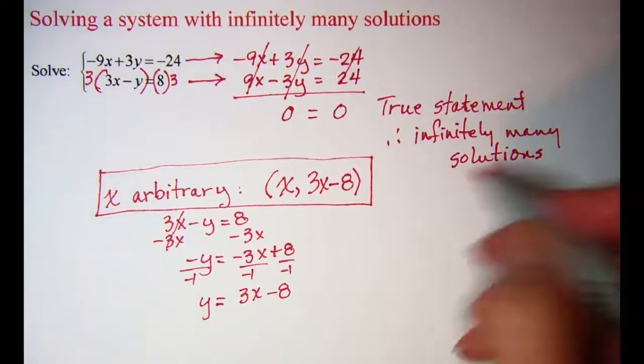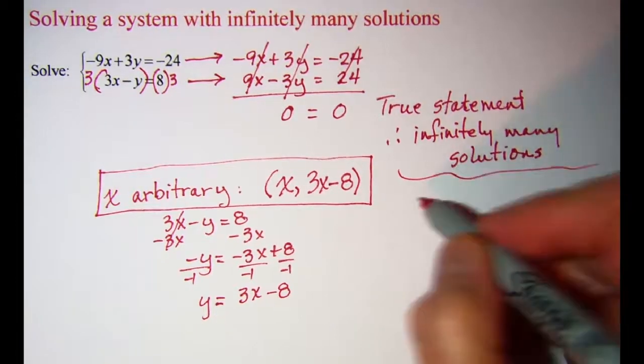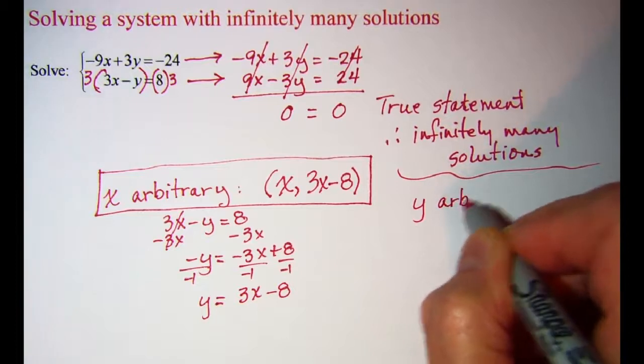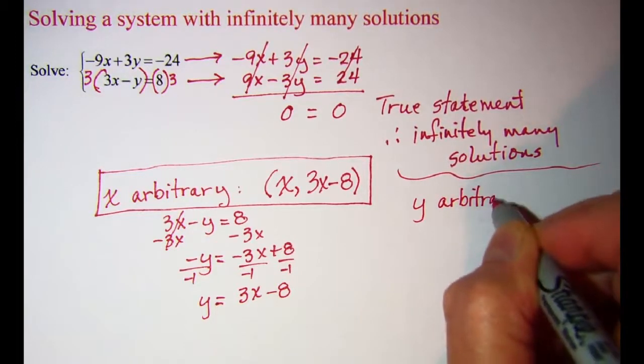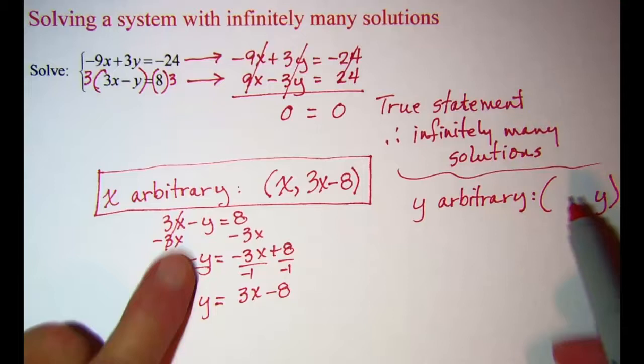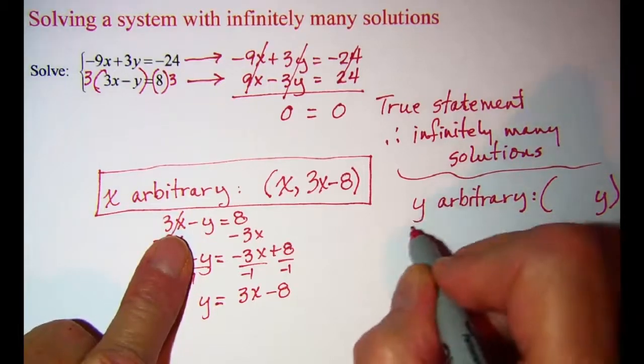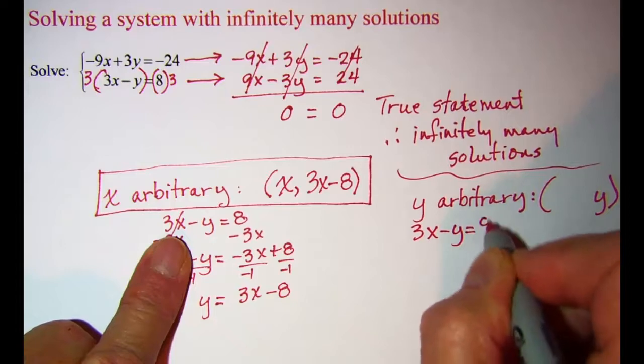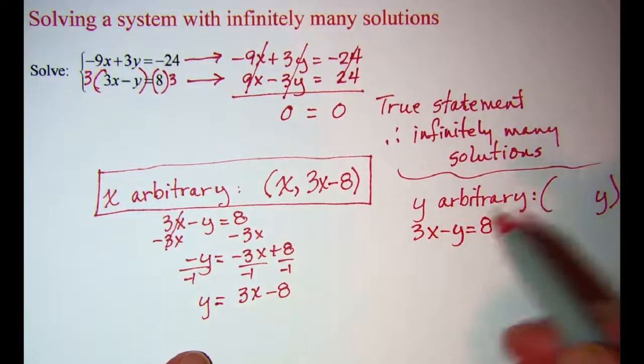Now if the y is arbitrary, let me go ahead and put that here. If the y is arbitrary, I need to write my x in terms of y. So I'm going to take the 3x minus y equals 8, and this time I'm going to solve for x. So add y to both sides.